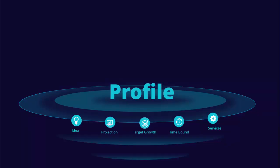In today's tutorial I'm going to show you how to create a company profile in PowerPoint with the help of the morph transition. As you can see, I have put a big profile text here, then added five different options: idea, projection, target growth, time bound, and services.